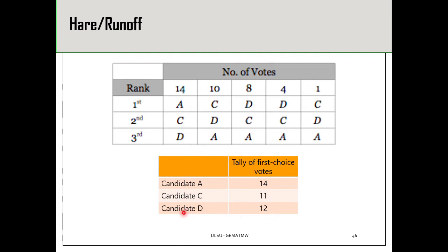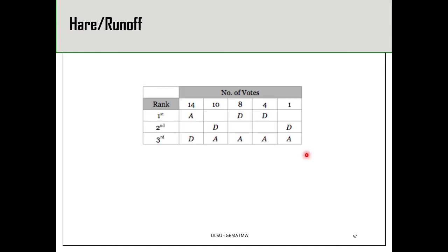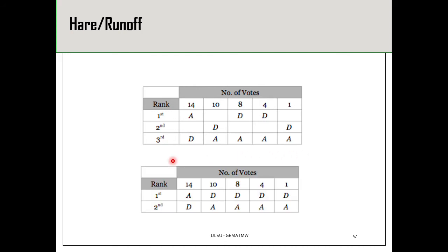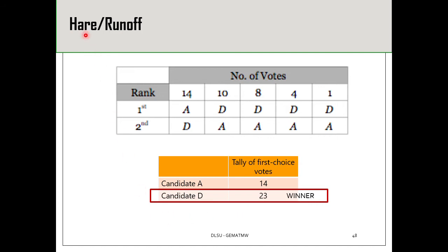Again, none of the candidates received more than half of the first place votes, so we eliminate candidate C. After eliminating candidate C, those cells will be empty, and we push the candidates upward to get the adjusted preferential table. Now there are only two candidates left. Tallying the first place votes: candidate A has 14 and candidate D got 23. Candidate D received more than half of the first place votes and is therefore declared the winner by the Hare runoff method.